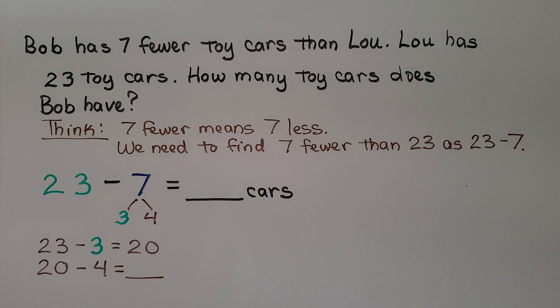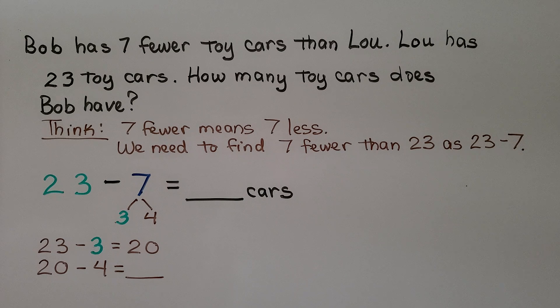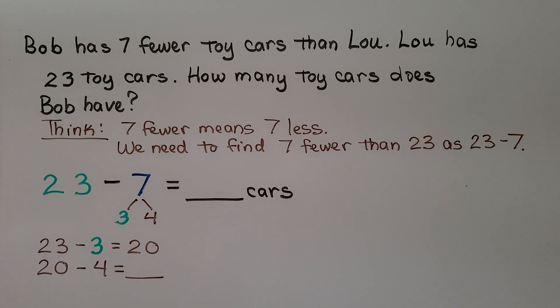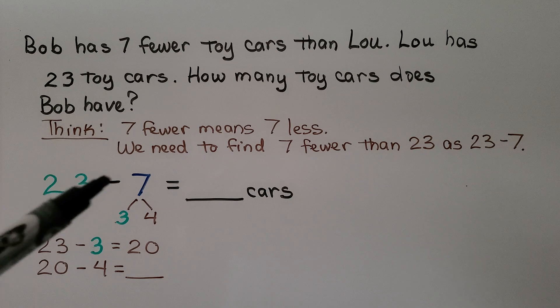Bob has 7 fewer cars than Lou. Lou has 23 toy cars. How many toy cars does Bob have? We think 7 fewer means 7 less. We need to find 7 fewer than 23 as 23 minus 7.